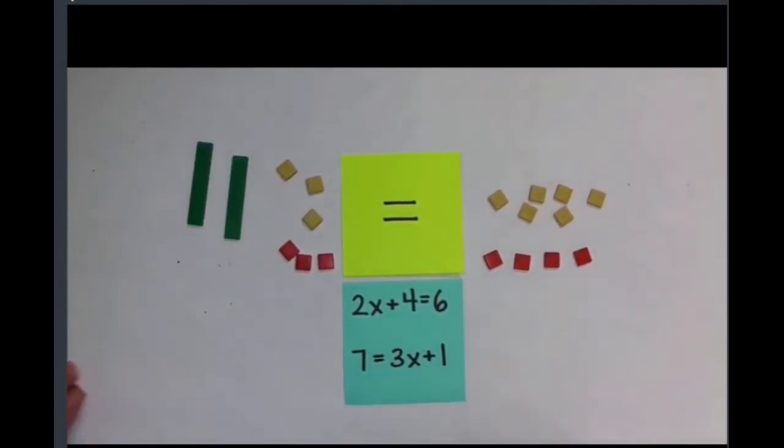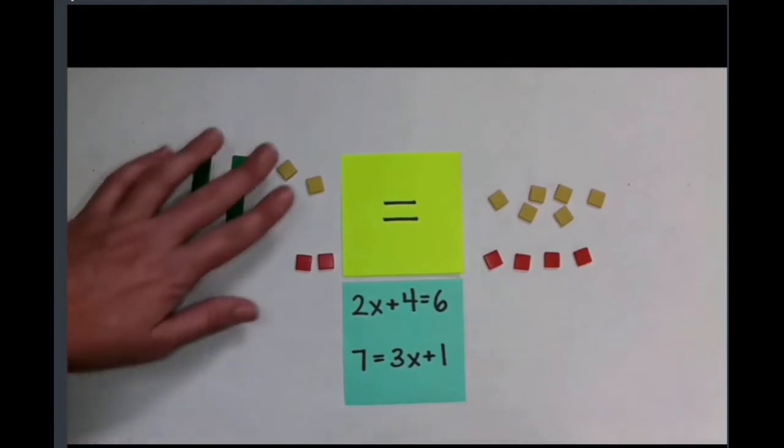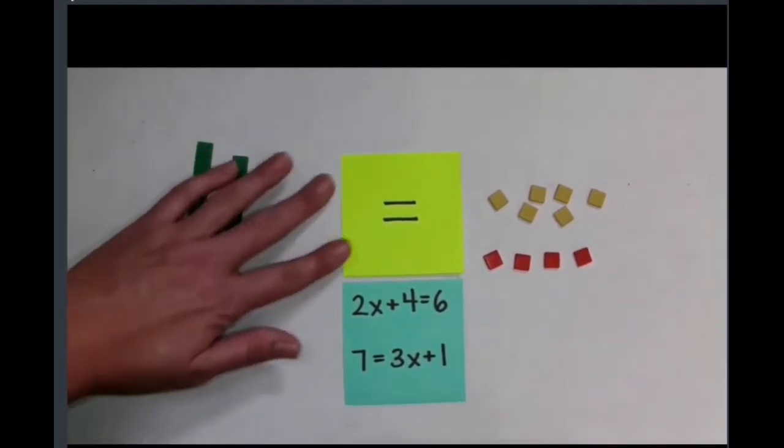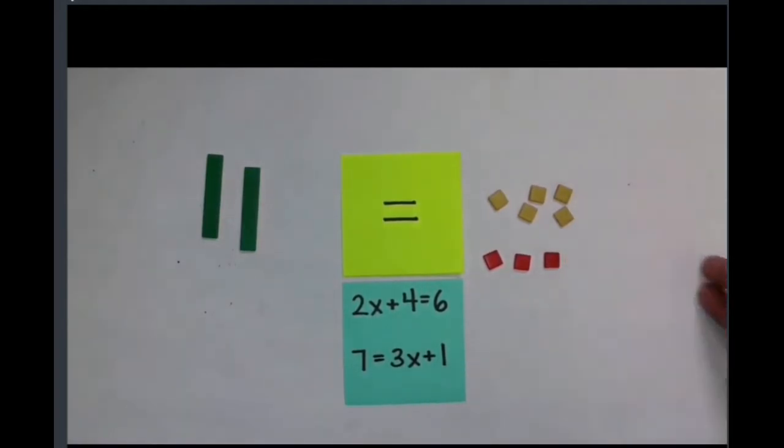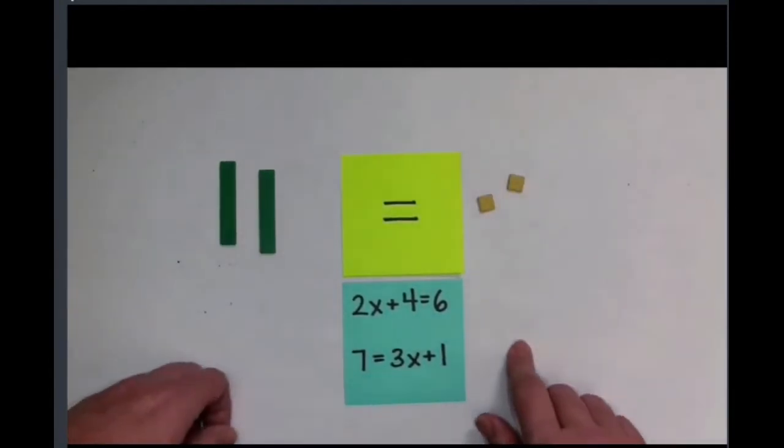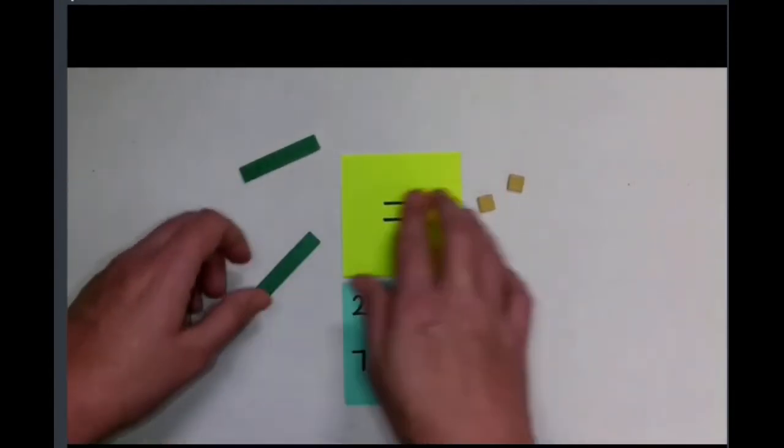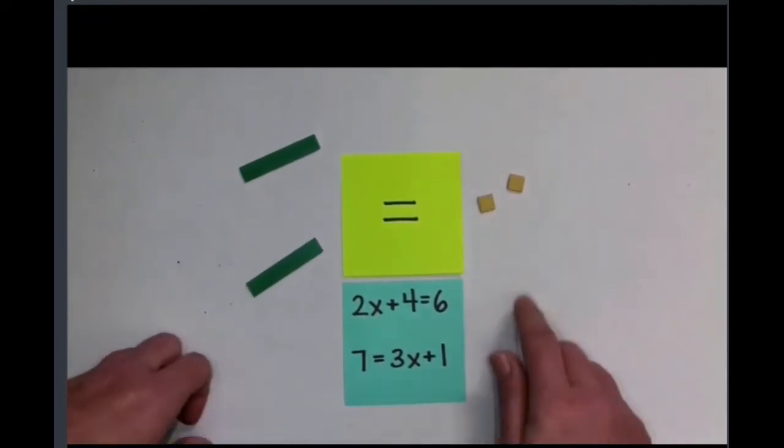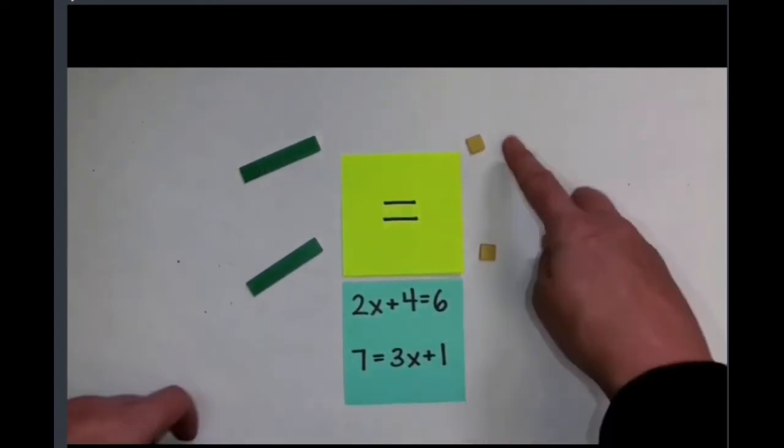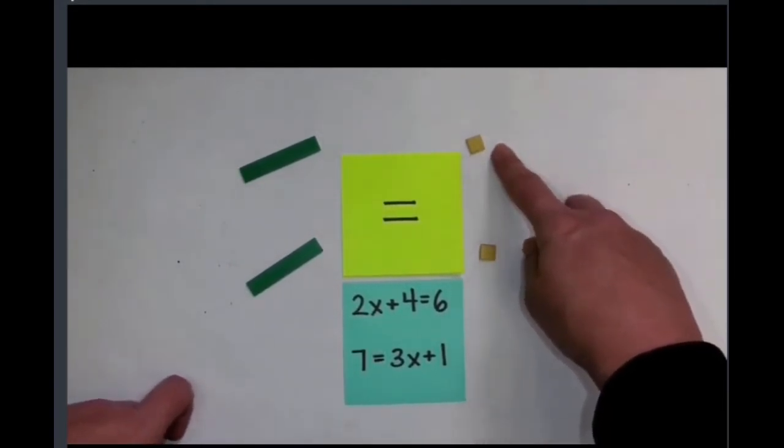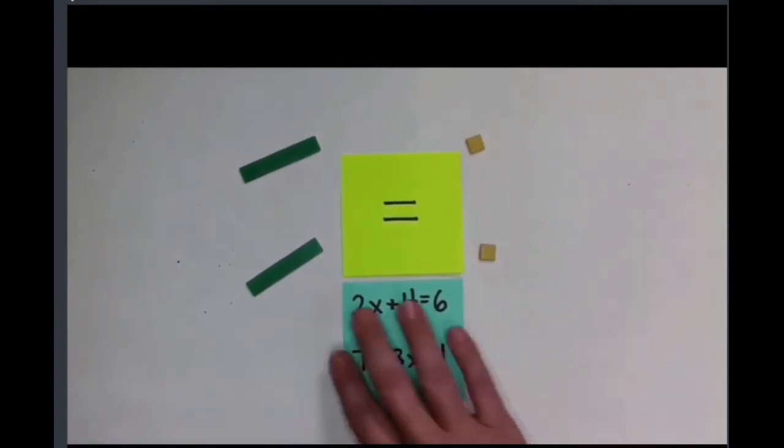Now I'm going to make my zero pairs and remove them from my workspace. I don't have any more zero pairs on this side of equal sign, but I want to see if I have some on that side, and we do. I'll go ahead and remove those. So now I have 2X equals 2. I want to figure out the value of a single X, so I'm going to distribute my constant among the X's. So I can see that each X has a value of positive one. So that was solving 2X plus 4 equals 6.